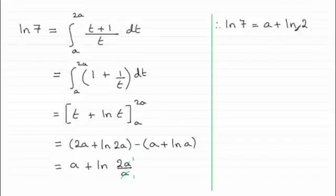And then all I've got to do is subtract the natural log of 2 from both sides, and that will give us a as being the natural log of 7 minus the natural log of 2. And again, we can use the subtraction rule here for logs, and that's going to be the natural log of 7 over 2.